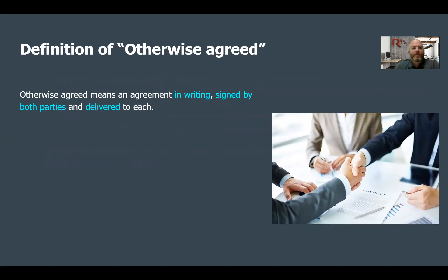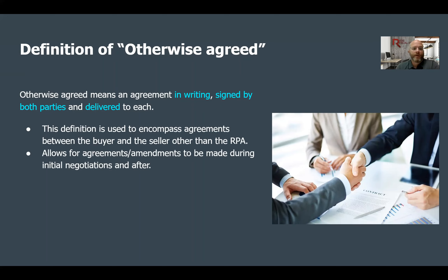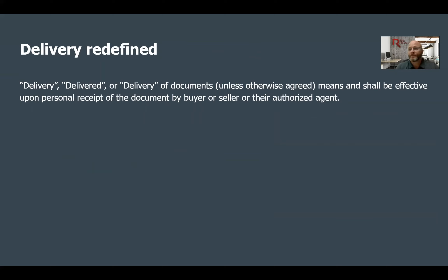They have a definition of 'otherwise agreed' now in the contract. Otherwise agreed means an agreement in writing signed by both parties and delivered to each. This definition encompasses agreements between the buyer and the seller other than the RPA, and it allows for agreements and amendments to be made during initial negotiations and after. What that's saying is: if you have agreements, get them in writing.